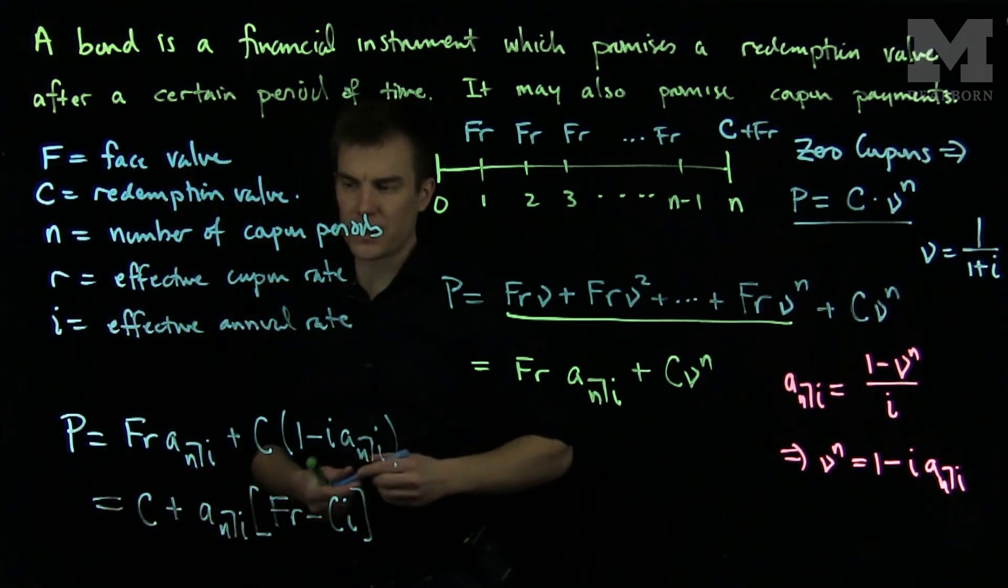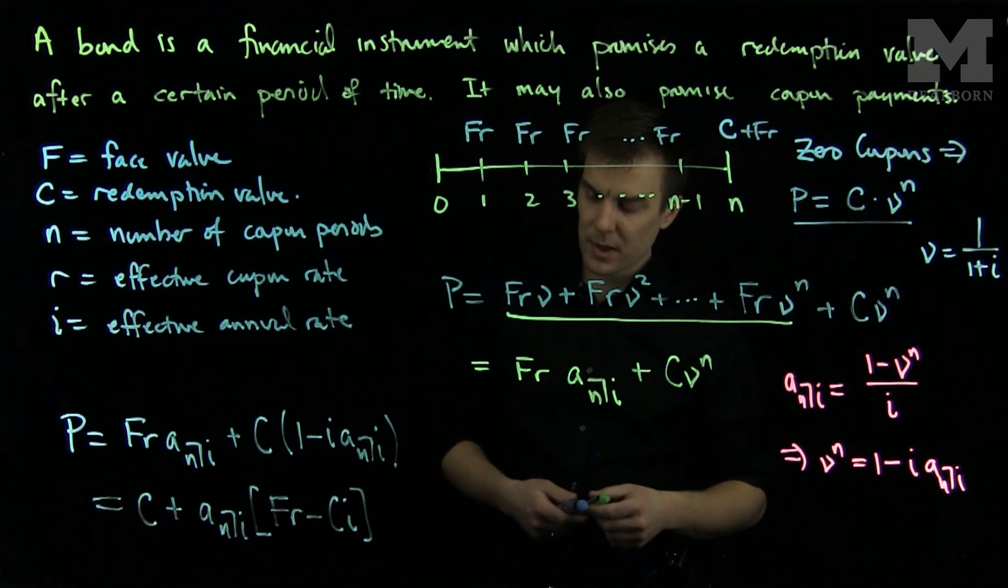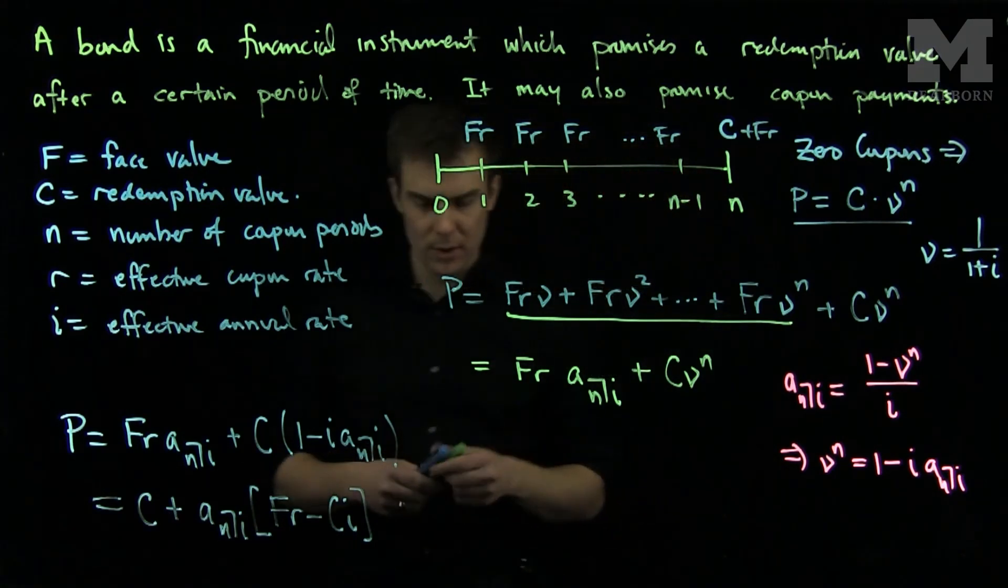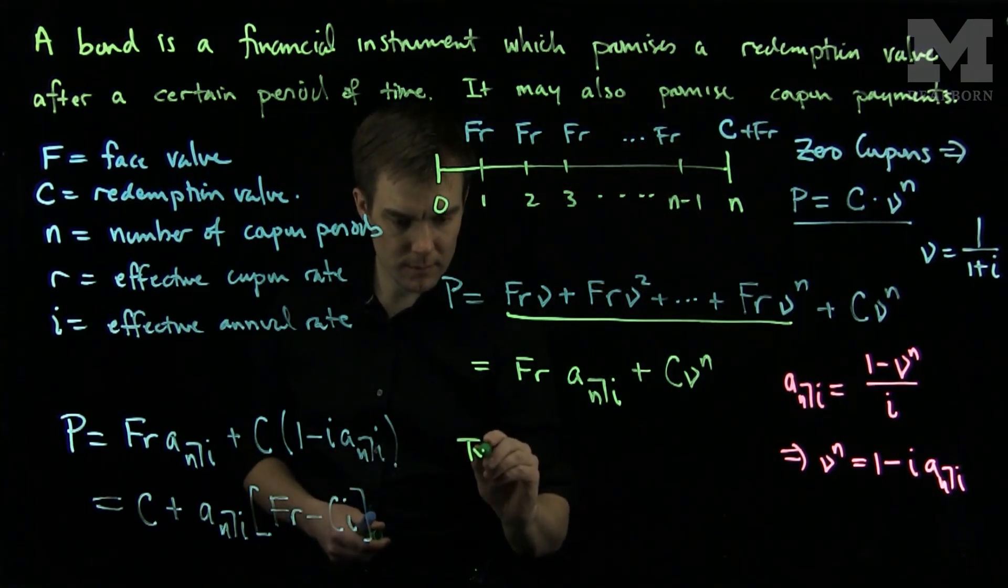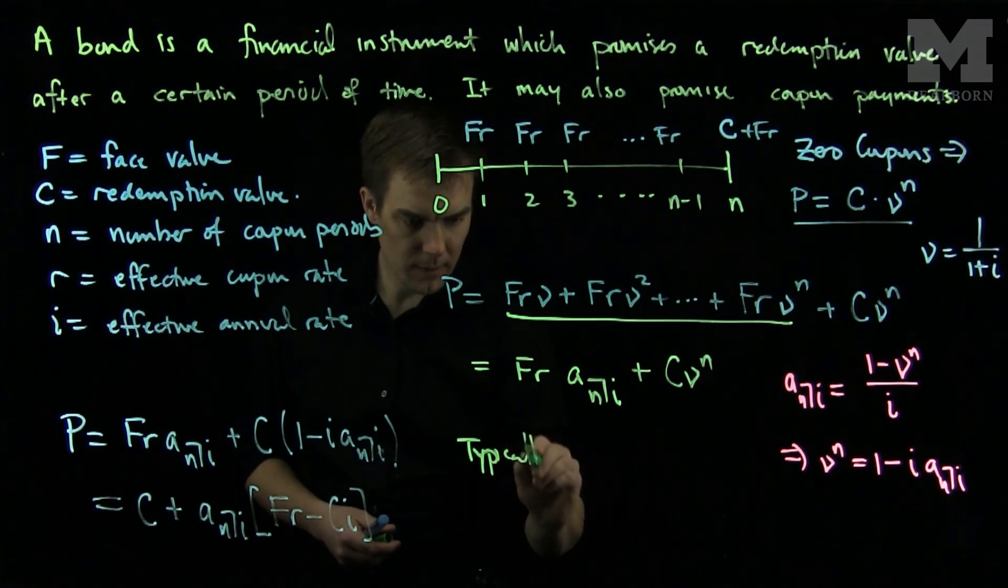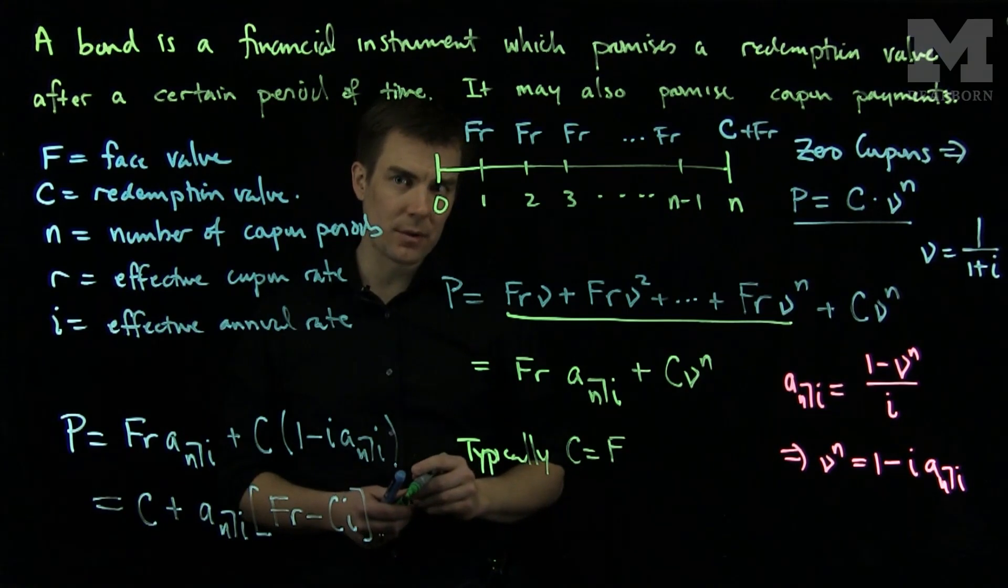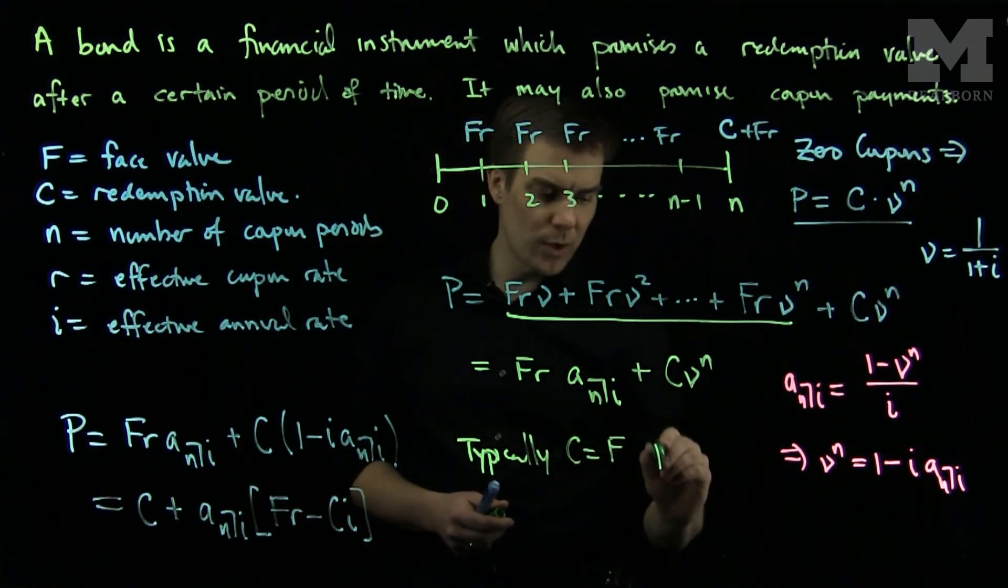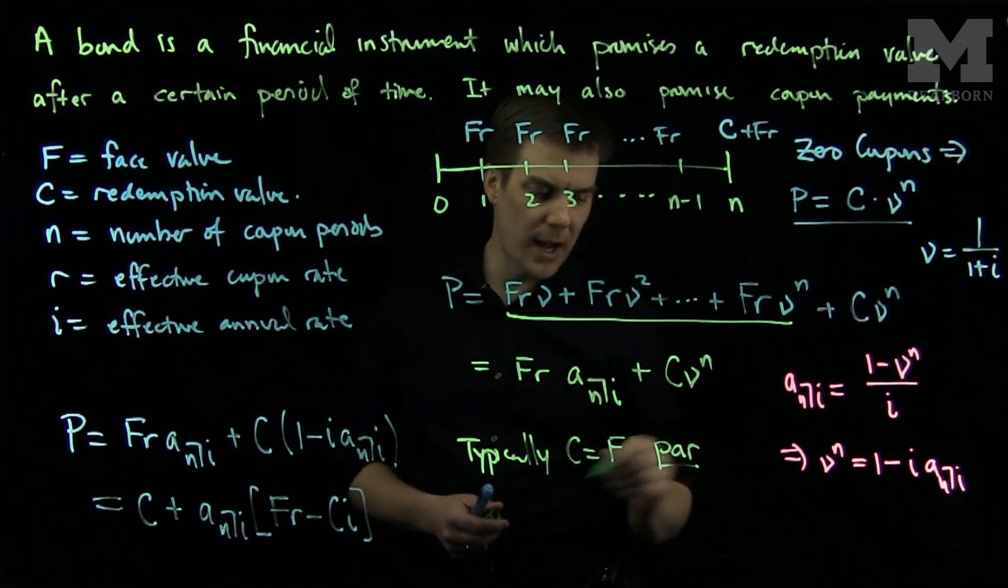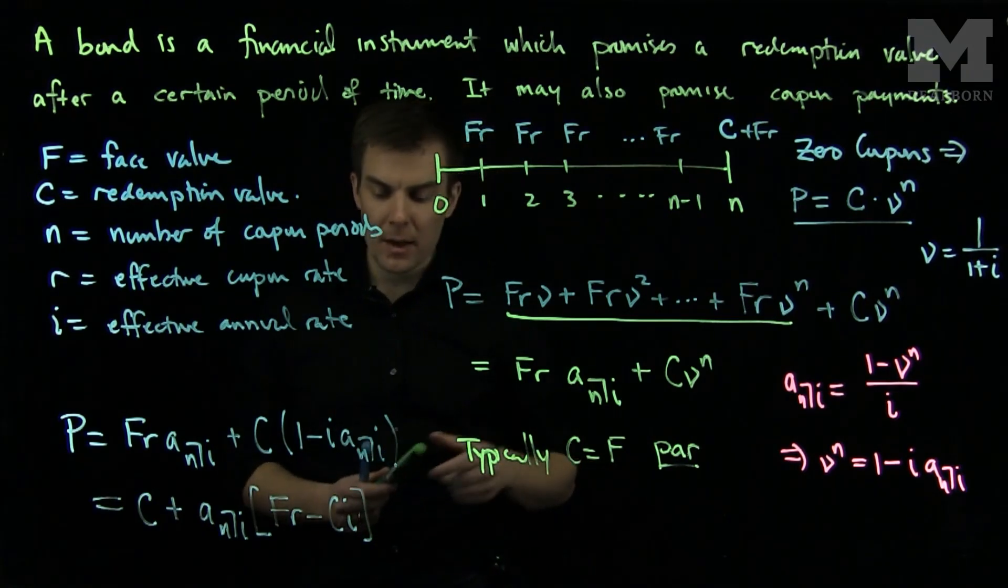Now, typically, it's the case that C equals F. The redemption value of the bond is equal to the face value of the bond. And in this situation, we say that it's a par bond, so the bond is priced at par.